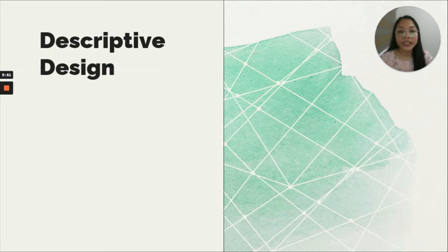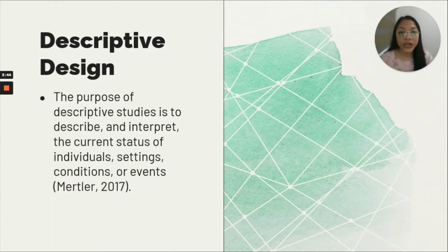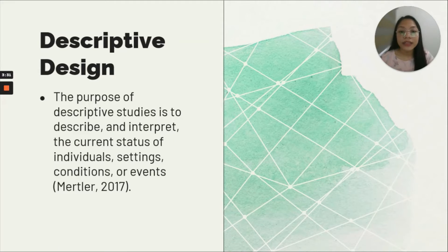One of the quantitative research designs is the descriptive design. The purpose of descriptive studies is to describe and interpret the current status of individuals, settings, conditions, or events, according to Myrtler in 2017. This design aims to describe systematically the facts and characteristics of a given population or area of interest. In this design, the researcher is simply studying the phenomenon as it is, with no manipulation of the variables involved.